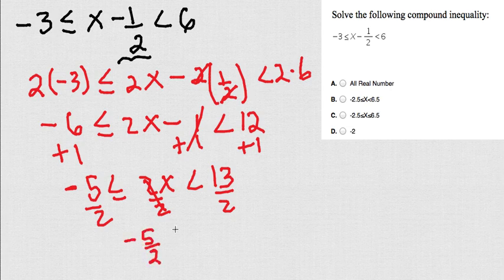Final answer, negative 5 over 2, less or equals than x, less than 13 over 2. Let's make this a little bit friendlier, even though you can actually see which one is your answer.